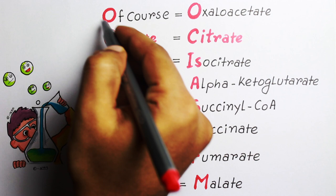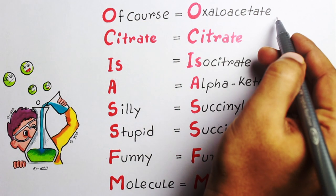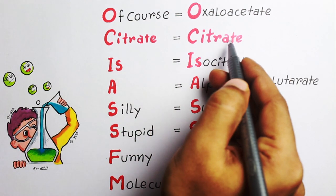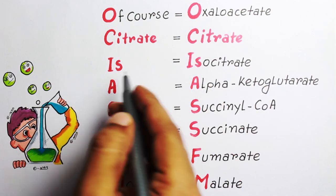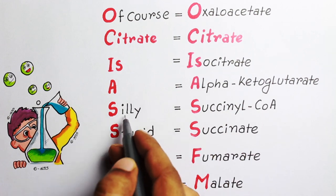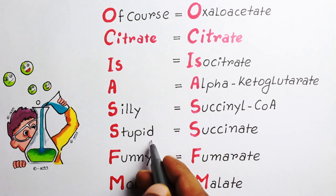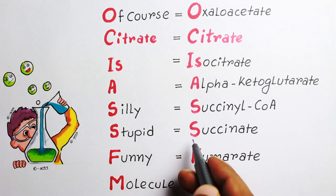So the very first word of the mnemonic represents the first letter of the compound. Here O represents oxaloacetate, citrate itself represents citrate, I for isocitrate, A for alpha-ketoglutarate, S for succinyl coenzyme A, then another S which means succinate, F for fumarate, and M for malate.